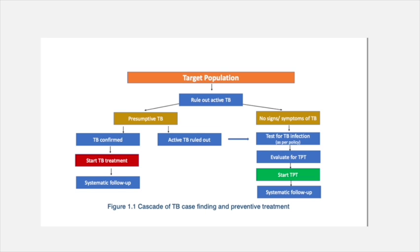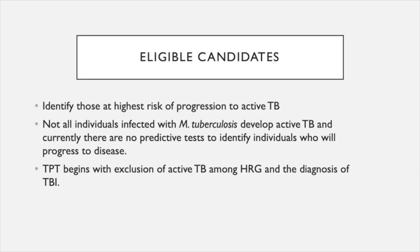Whom to target for preventive therapy? First of all, all household contacts of TB patients come as the target population. In each target population, we have to rule out active TB. If the patient is asymptomatic and there are no signs of active TB, tests for TB infection can be done, and the patient will be evaluated for preventive therapy and started on it if tests are positive. If the patient does have signs of presumptive TB, active TB has to be ruled out, or if confirmed, treatment needs to be started.